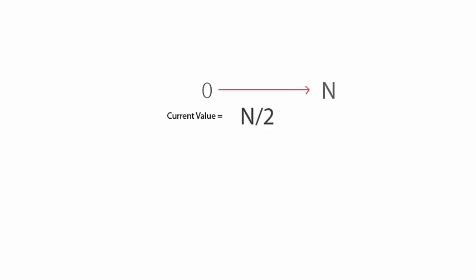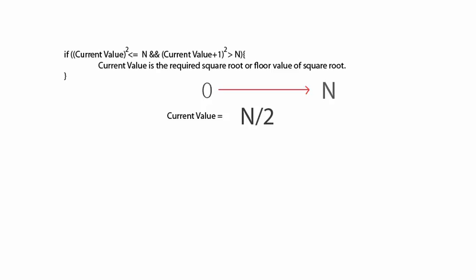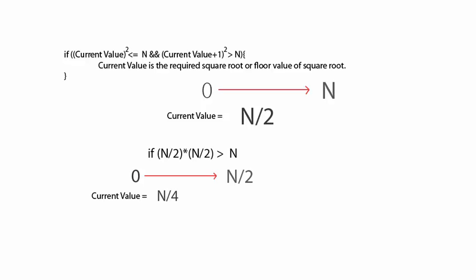To do binary search, we take a range from 0 to n, find the middle element, and mark it as the current value. We check if the square of the current value is less than or equal to n and the square of the next number after the current value is greater than n. If the square of the current value is greater than n, the required square root lies in the range 0 to n/2, where n/2 is the current value, and we find the middle element n/4.